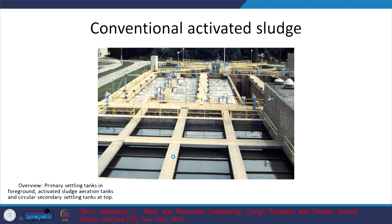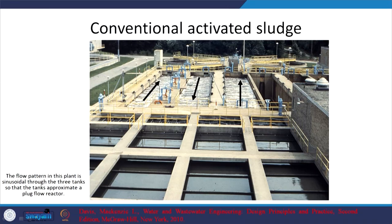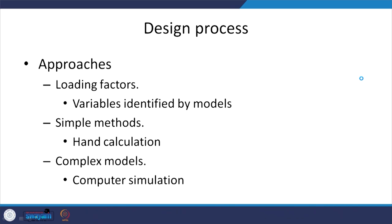Conventional activated sludge: primary sedimentation, then aeration where microbes degrade the substrate, then circular secondary clarifiers. The flow has a sinusoidal pattern to give plug flow characteristics. We noted earlier that plug flow is better than the ideal CSTR. Design process options are: one based on loading factors — simple methods — and more complex computer simulation methods, which we will not cover in detail.